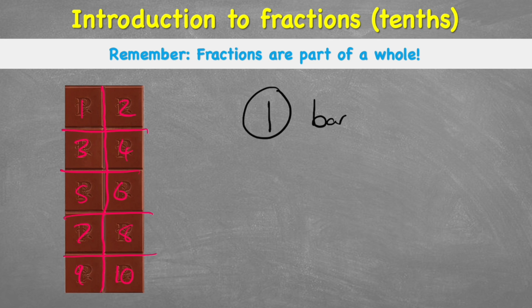So therefore, one of these pieces is worth one tenth. Or in other words, we can write it into our fractions. We split our whole into ten. So the number on the bottom would be a ten. And I have only one of them. So I have one tenth.